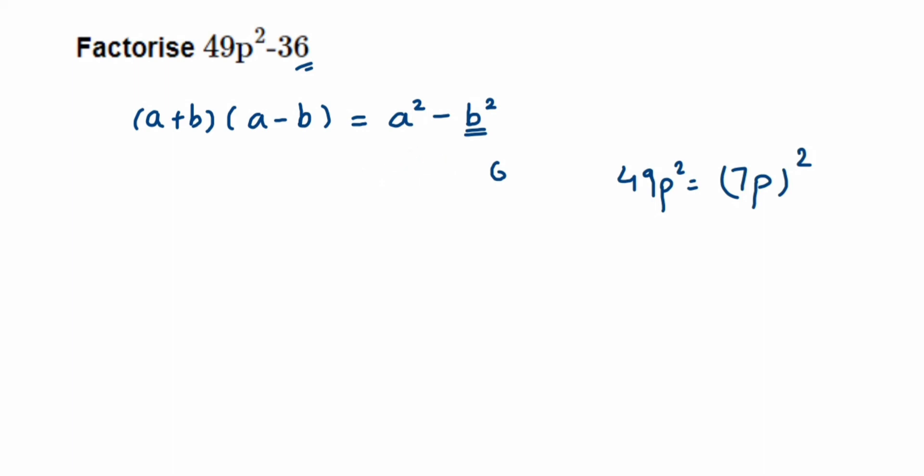So this will be equal to (7p)² - 6². But this is equal to (a + b)(a - b), so in place of a it's 7p and b is 6. Therefore, (7p + 6)(7p - 6).